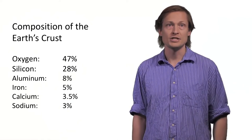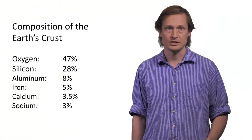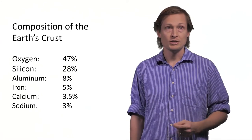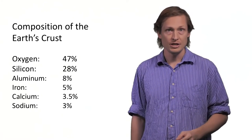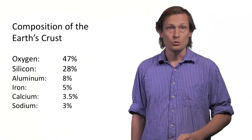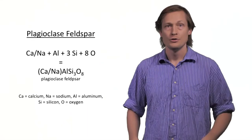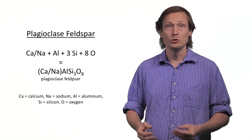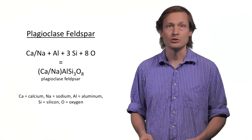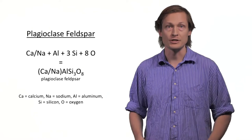To add some context to this discussion, let's consider the composition of the Earth's crust. The six most abundant elements in the crust are oxygen, silicon, aluminum, iron, calcium, and sodium. Aluminum itself actually makes up about 8% of the Earth's crust. Given the abundance of aluminum, it actually seems a bit strange that ruby and sapphire would be so rare.